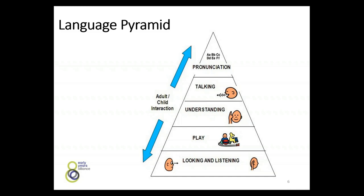To start our journey today, we're going to consider the language pyramid, which we've referred to previously. Because children learn through play, we'll firstly consider the links between play and learning environments. When high quality learning environments are planned for by practitioners, high quality play opportunities tend to follow. This mixture of a stimulating learning environment providing opportunities for imaginative play naturally leads to high quality adult-child interactions — a constant running all the way down the side of the pyramid — making it a communication-rich environment.